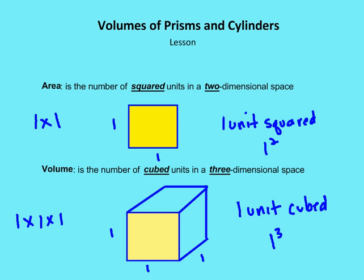Let's start first by talking about area versus volume. In prior lessons, we talked about area. Area is the number of units squared in a two-dimensional space. We have a square here with one unit on the left and one unit in terms of its length. So one unit long and one unit wide. We say that this particular square is one unit squared.